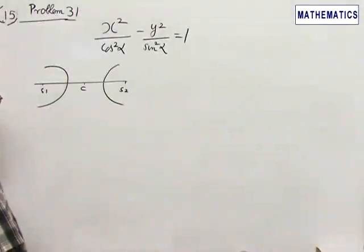Question number 15, refer to problem 31. You are given the equation of the hyperbola: x squared by cos squared alpha minus y squared by sin squared alpha equal to 1.